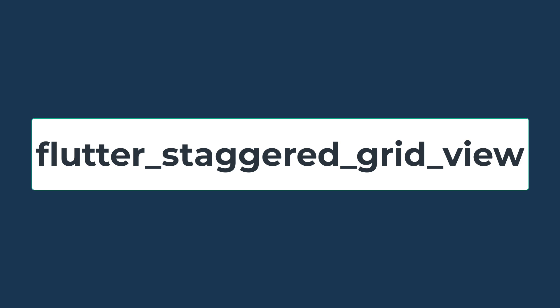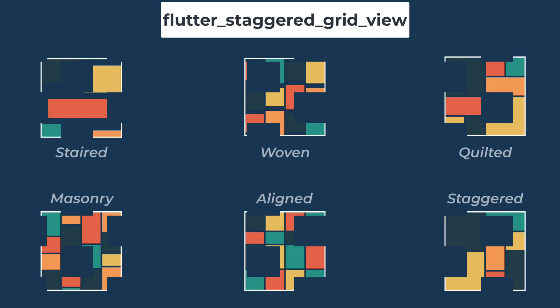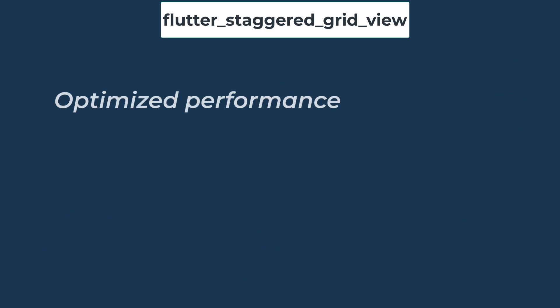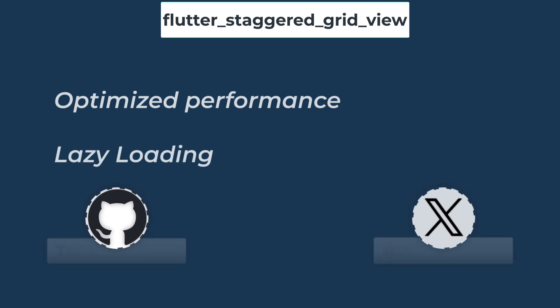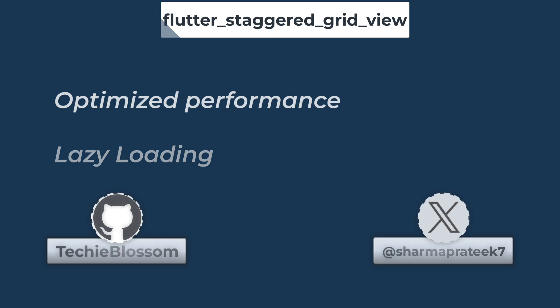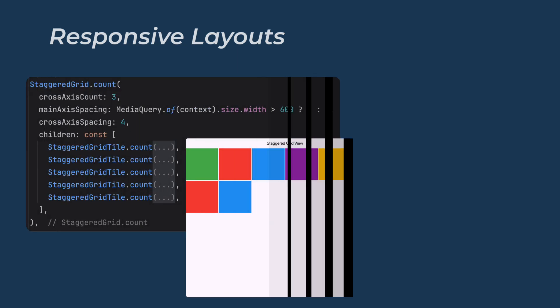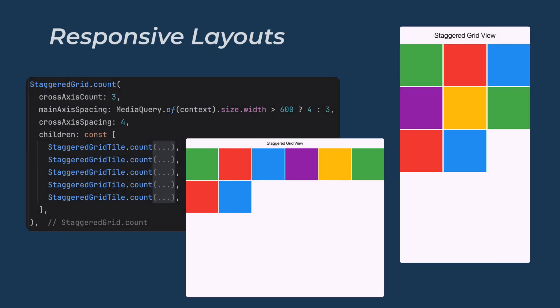Third in the list is Flutter Staggered Grid View. This package is designed for creating custom staggered grid layouts, where items have varying sizes and are arranged in a grid-like fashion with flexible positioning. It has optimized performance with lazy loading — only items currently visible on the screen are rendered. This reduces memory consumption and improves performance, especially with large datasets. It also supports responsive layouts for various screen sizes, ensuring the layout looks good on all devices.